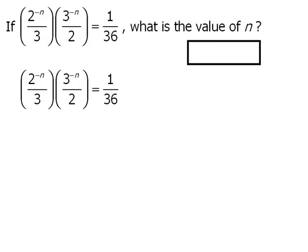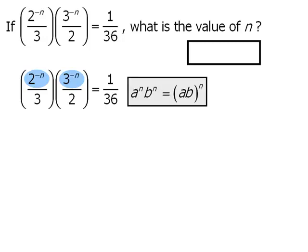To do this, we'll multiply these two fractions together. Now when we multiply the numerators, we should recognize that both terms here have the exact same exponent. As such, we can apply the following rule to rewrite this product as 6 to the power of negative n.